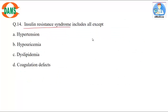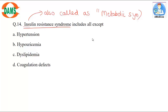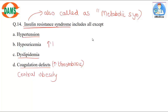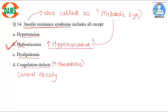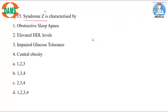Question 14: Insulin resistance syndrome includes all except. Insulin resistance syndrome is also called metabolic syndrome. Metabolic syndrome is characterized by insulin resistance, hypertension, dyslipidemia, coagulation defects with increased risk of thrombosis, and central obesity. There is hyperuricemia — not hypouricemia — so hypouricemia would be the wrong/exception answer. Remember: hyperuricemia is present in a patient with metabolic syndrome.